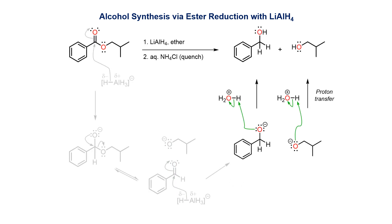Once the reduction steps of the reaction are complete, there are two equivalents of alkoxide in solution that need to be quenched. Addition of dilute acid delivers the two alcohols that are isolated as the ultimate reaction products.